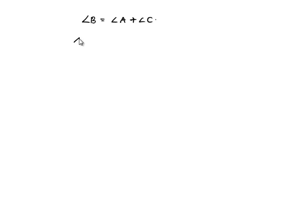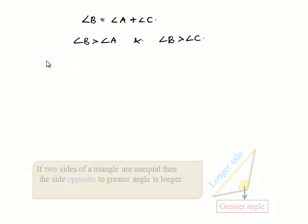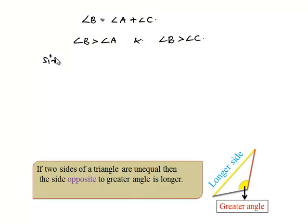So here we can write that angle B is always greater than angle A and angle B is also always greater than angle C. By this we have a concept that the side opposite to the greatest angle is greater.